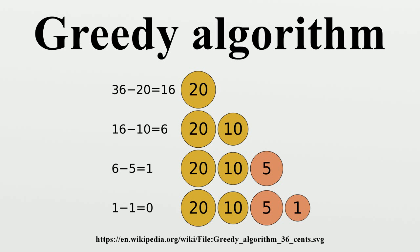In general, greedy algorithms have five components: A candidate set, from which a solution is created, and a selection function, which chooses the best candidate to be added to the solution.